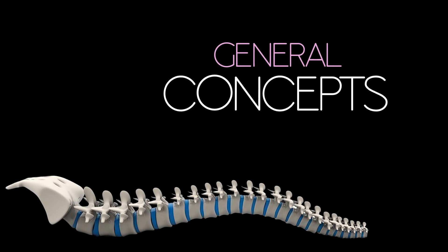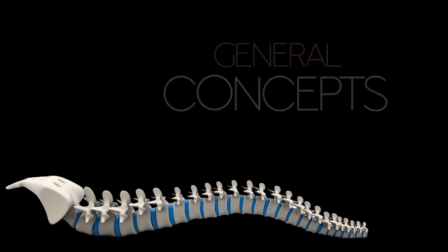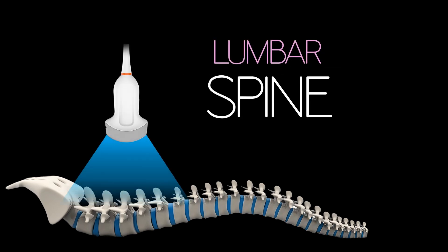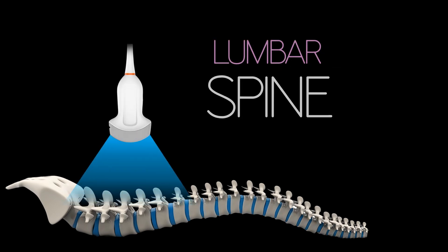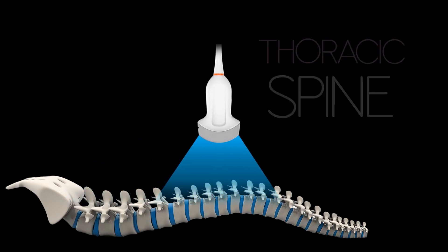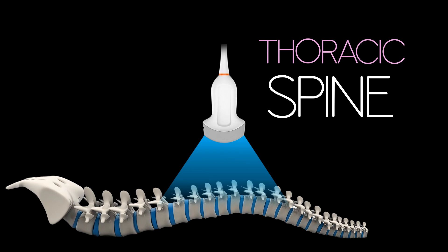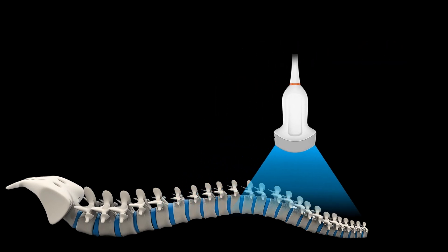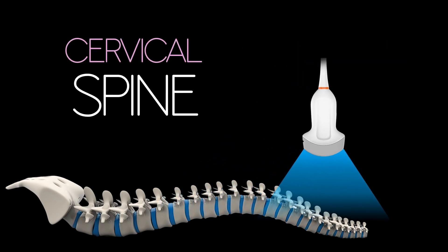The second part will focus on the characteristic sonographic patterns of the lumbar spine. The third section will explore the scanning criteria for the thoracic spine. Finally, the fourth part will be dedicated to the ultrasound evaluation patterns of the cervical spine.